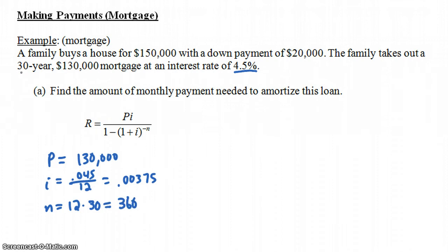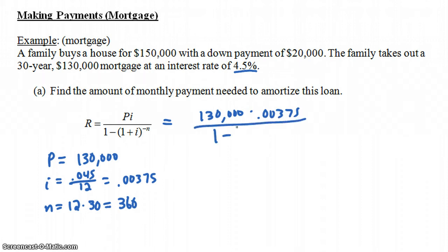That's pretty standard for a 30-year loan. If you want to pay off the house faster, you could take out a 15-year loan — your payments would be more, but you'd be paid off much more quickly. Plugging this into the formula, we get 130,000 times 0.00375, all divided by 1 minus (1.00375) raised to the negative 360th power.